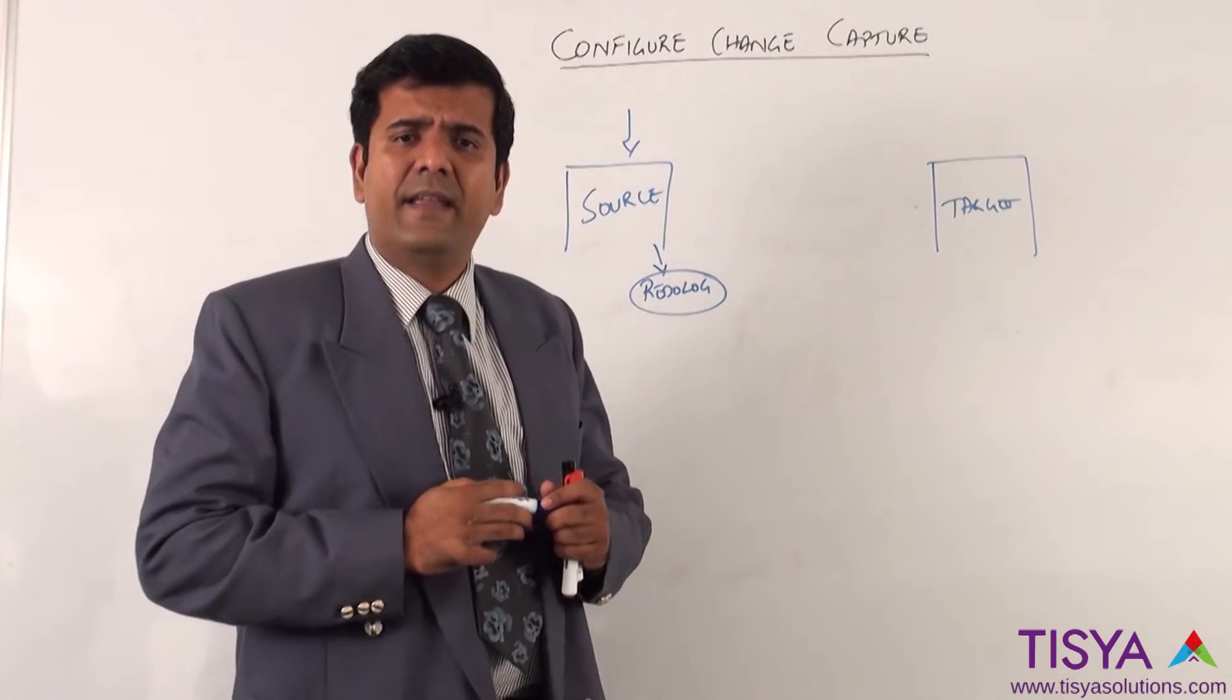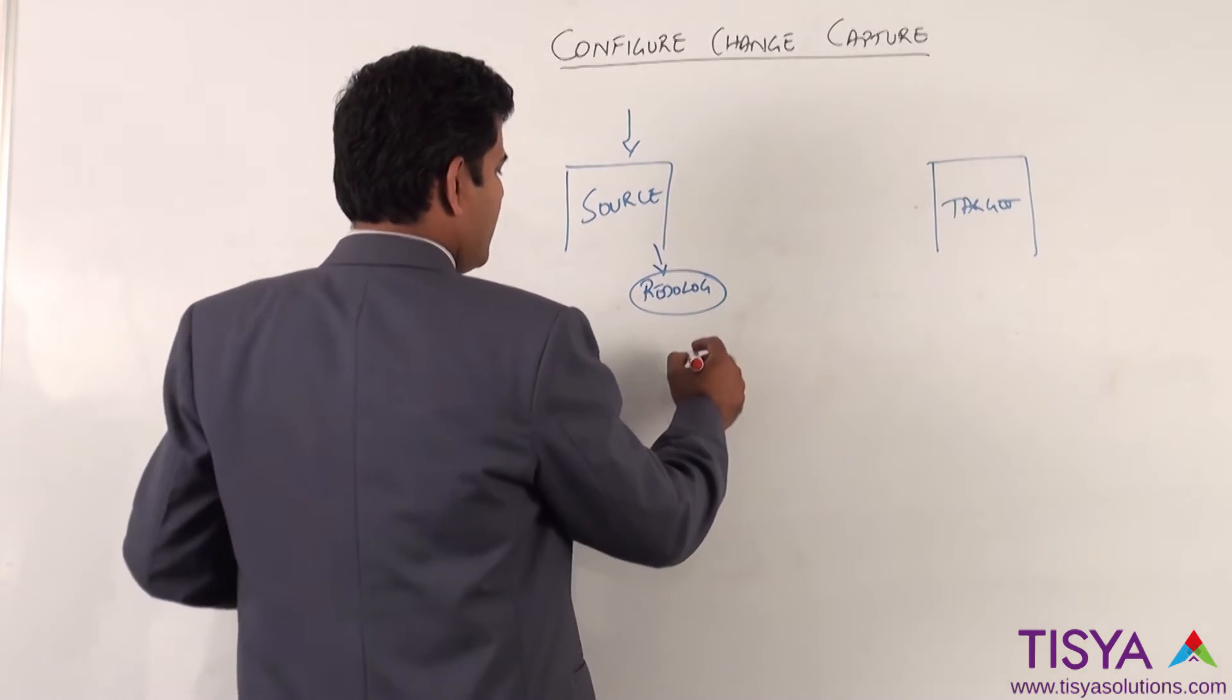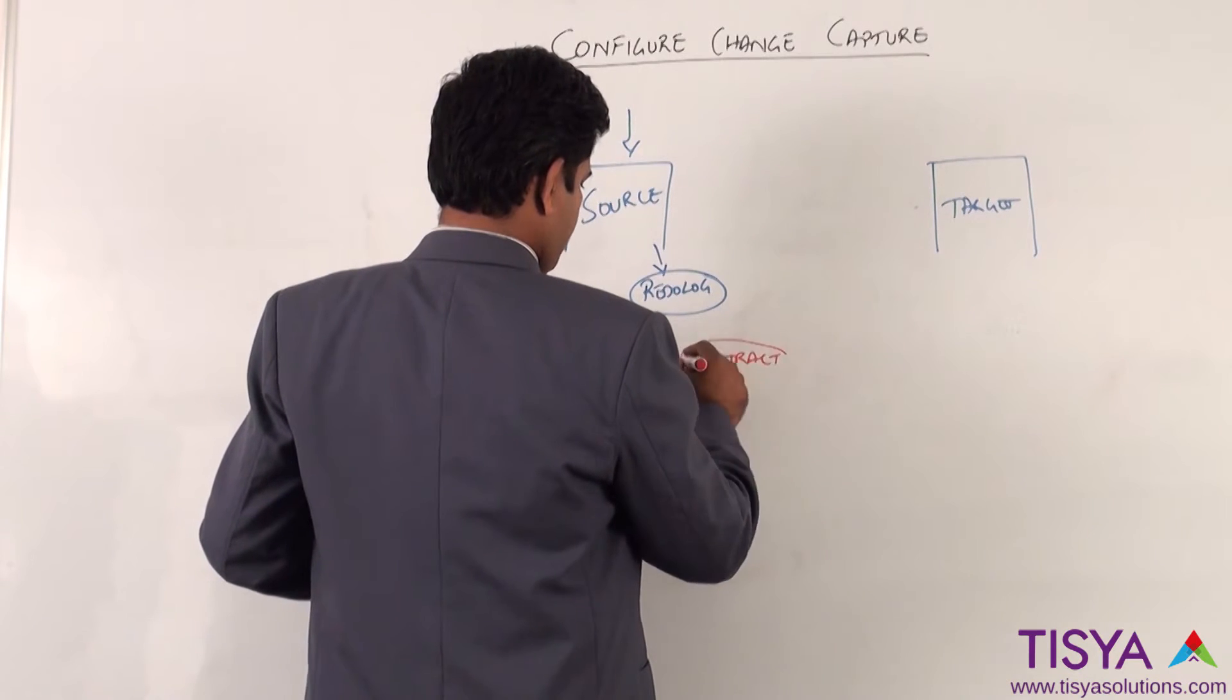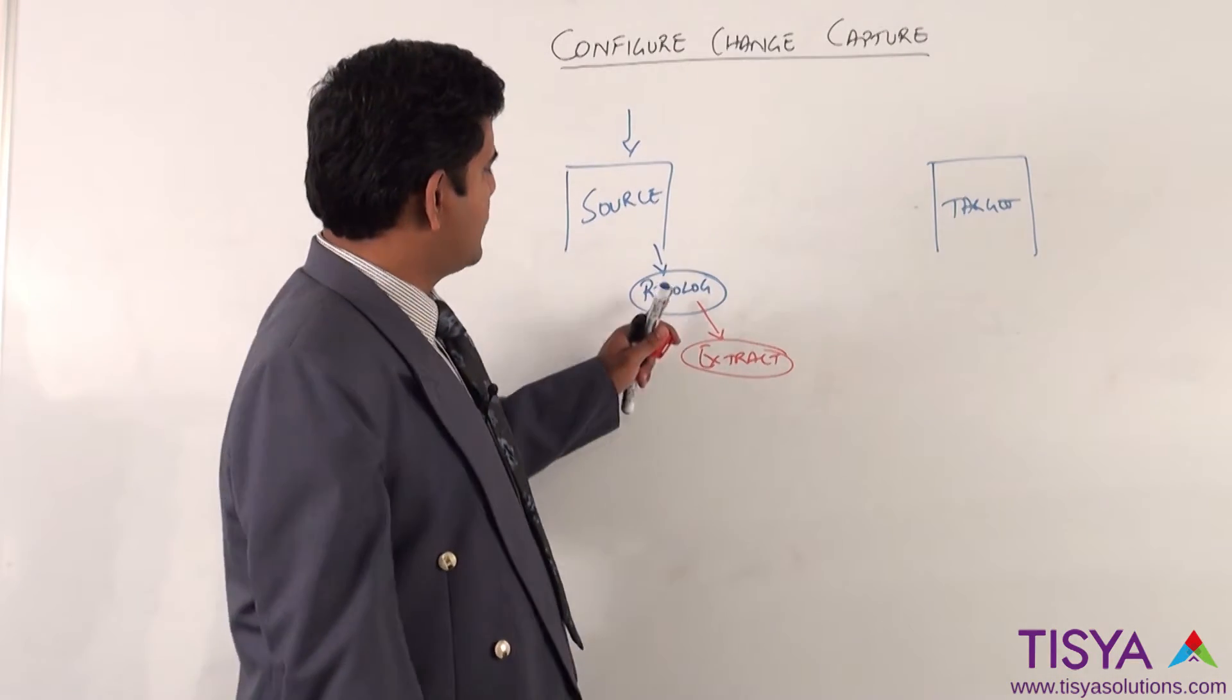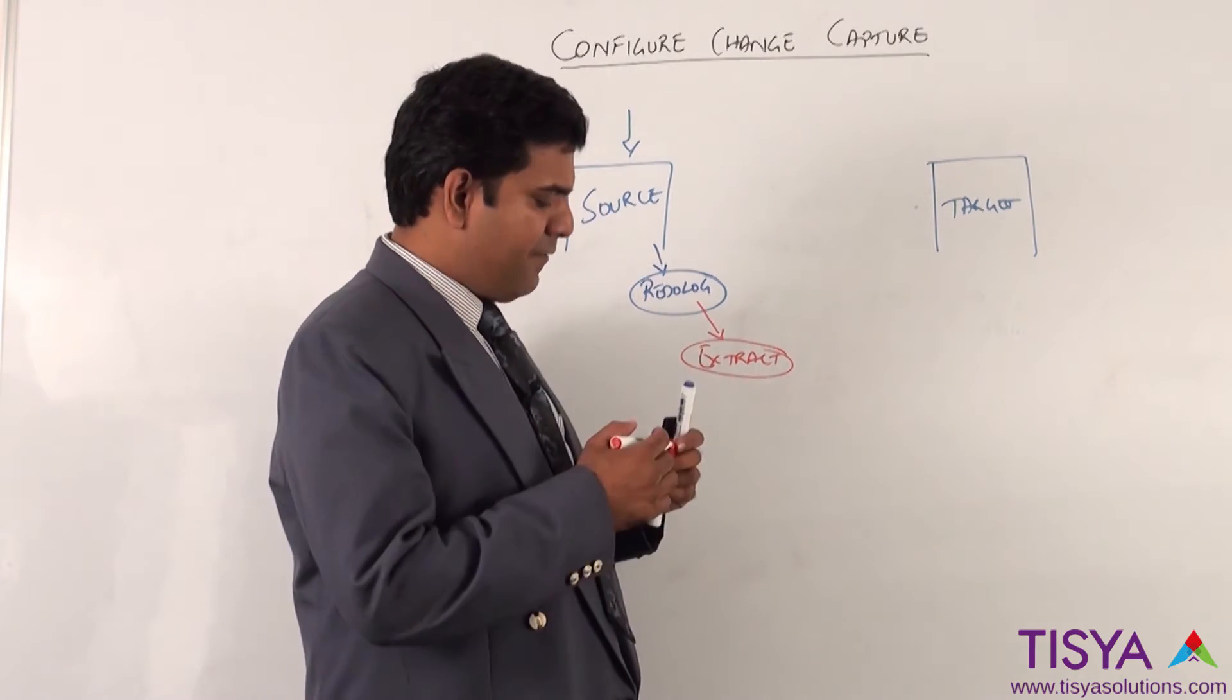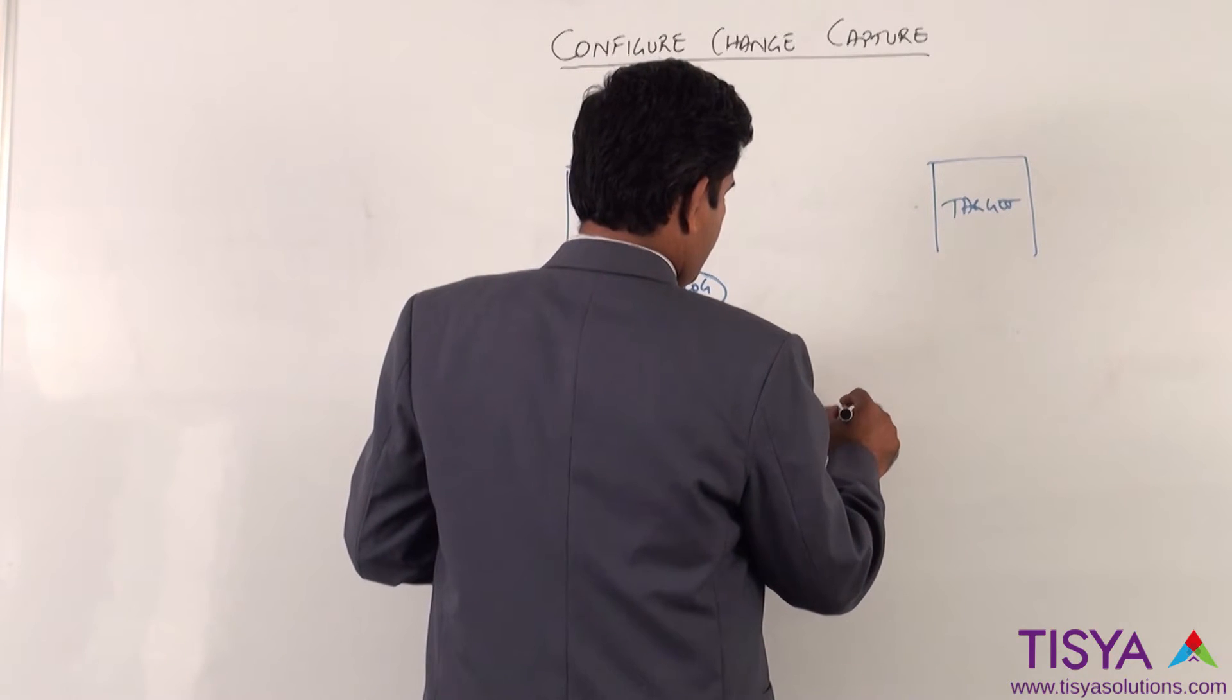Golden Gate is a low impact change capture mechanism wherein the extract you configure is going to read from the redo log, which is not going to impact the source system's performance. Having read from the redo log, it is going to create a trail file.